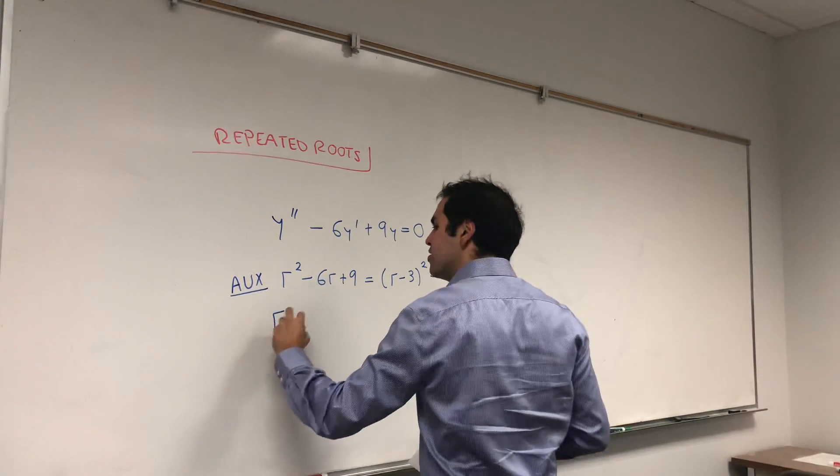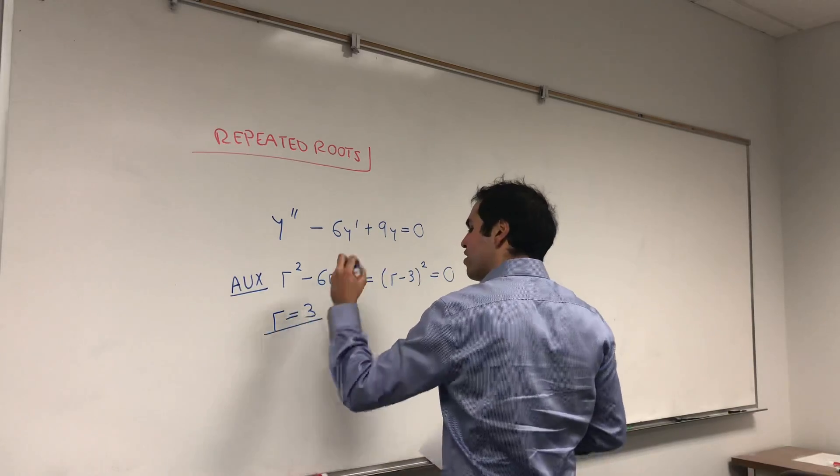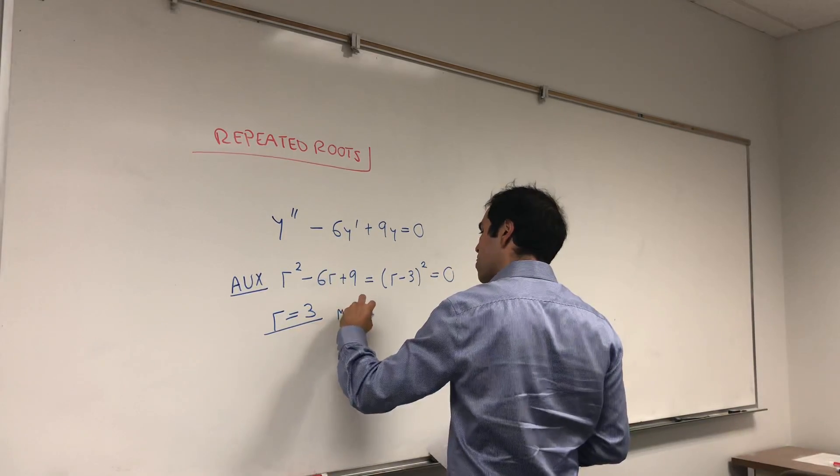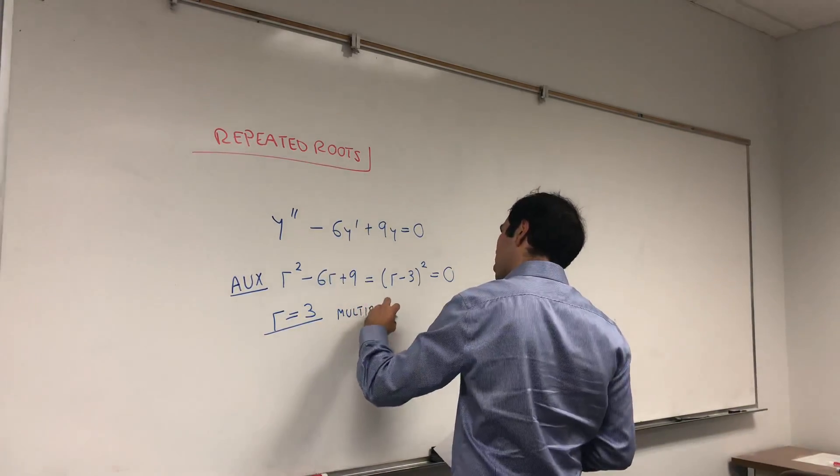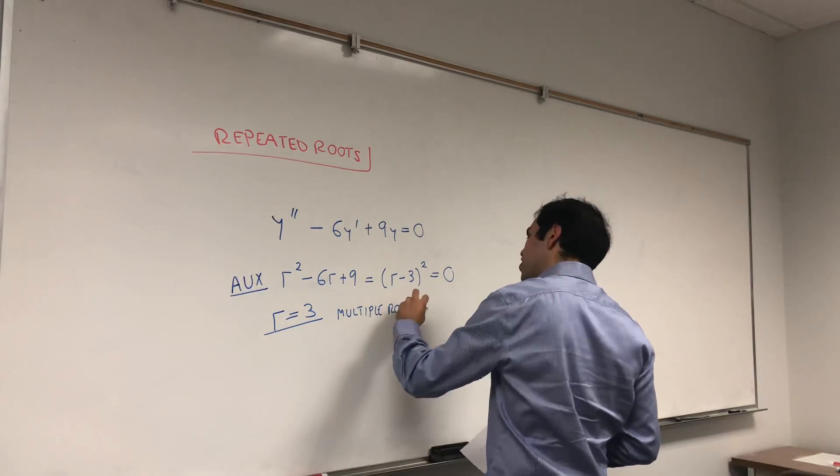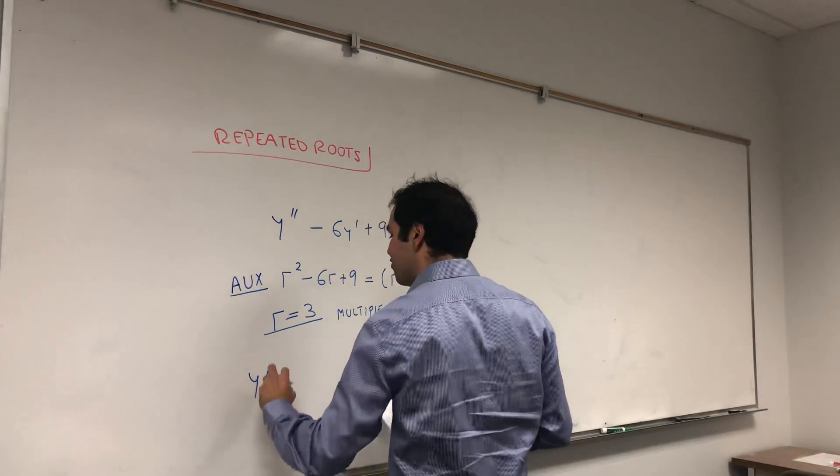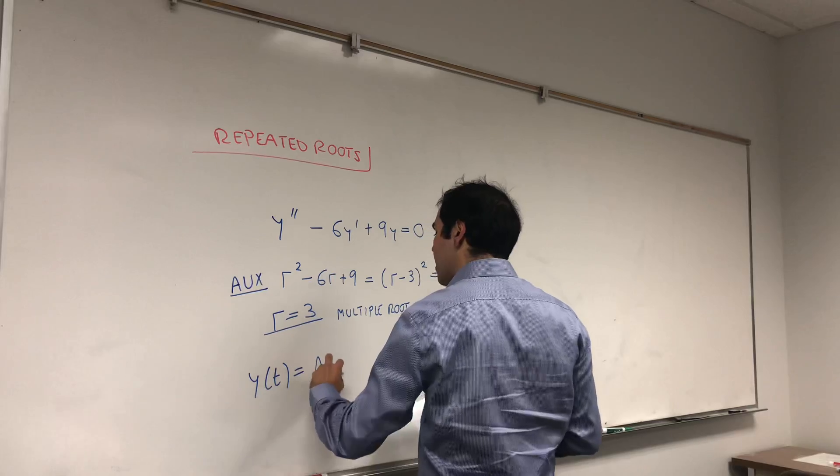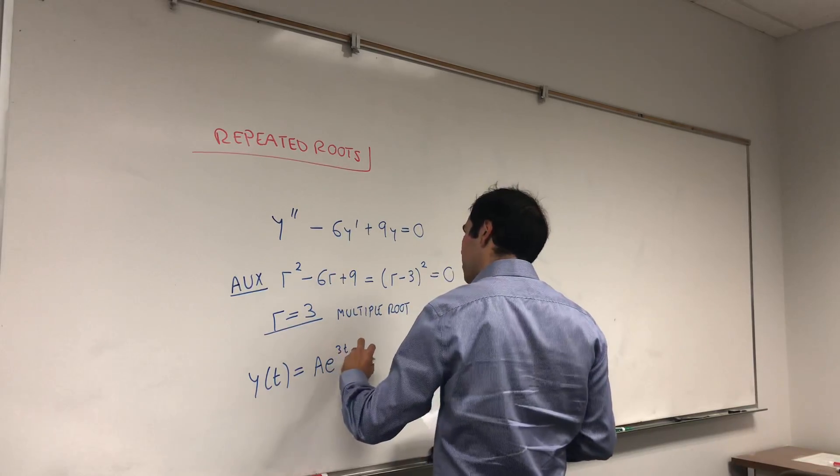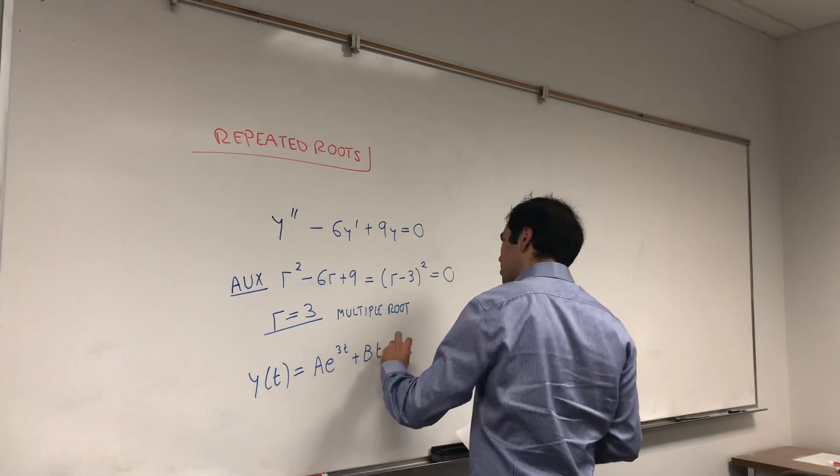You let that be zero, so r is 3 with a double root, and you just say well y of t is ae to the 3t plus bte to the 3t.